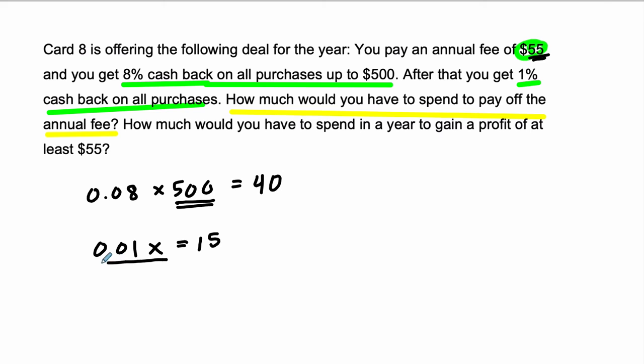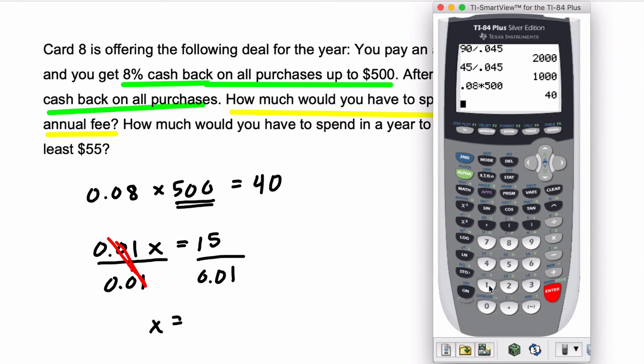And to solve that, we just divide by 0.01 on both sides, right? Because on the left-hand side, these will cancel. And then we have X equals $15 divided by 0.01. So 15 divided by 0.01.